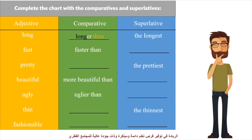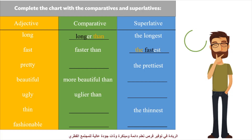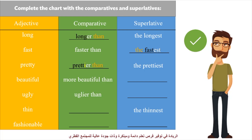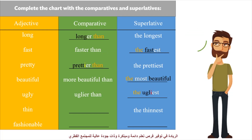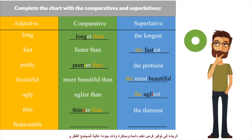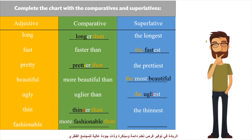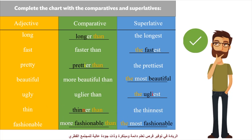Bad is also an irregular adjective. Beautiful — let's complete the chart. Long — longer than — one-syllable adjective. Fast — the fastest. Pretty ends with Y, we change Y to I: prettier than. Beautiful is a three-syllable adjective: the most beautiful. Ugly ends with Y: the ugliest. Thin — we double the N: thinner than. Fashionable — we write MORE and MOST: more fashionable than, the most fashionable.